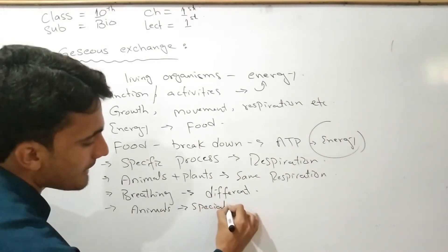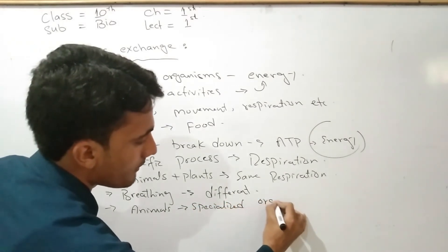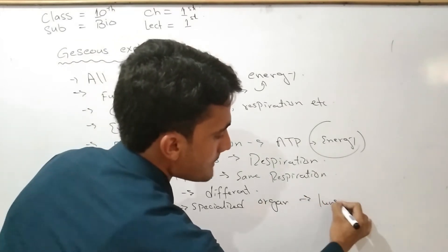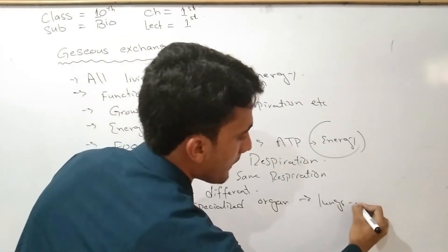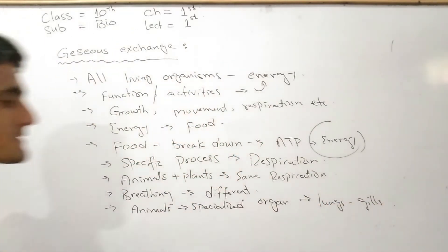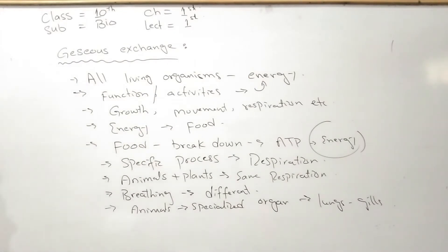We all have specialized organs — lungs or gills. Plants do not have specialized organs; they use breathing and gaseous exchange through diffusion of gases.